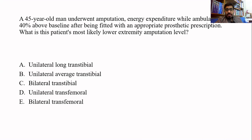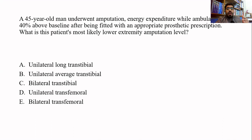A 45-year-old man underwent amputation and energy expenditure while ambulating is 40 percent above baseline after being fitted with an appropriate prosthetic. What is the most likely amputation level? You must memorize the energy expenditure percentages for Lisfranc, transtibial average, long, short, bilateral transtibial, transfemoral, and through-knee amputations. The correct answer is bilateral transtibial, or short transtibial, both of which correspond to approximately 40 percent increased energy expenditure.